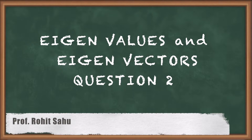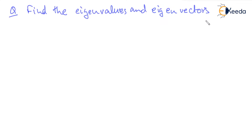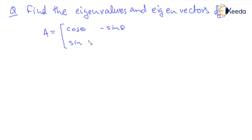We have already seen one question on eigenvalues and eigenvectors. This is the second question on eigenvalues. Find the eigenvalues and eigenvectors of the matrix: cos theta, minus sin theta, sin theta, cos theta.